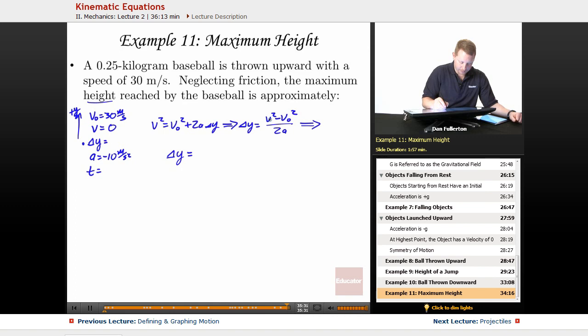v initial squared, 30 squared over 2 times my acceleration, negative 10. That's going to be negative 900 over negative 20 or 45 meters.